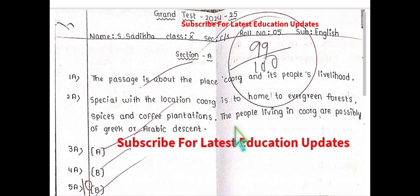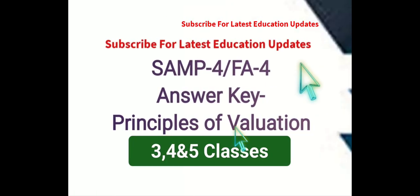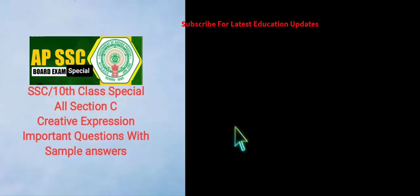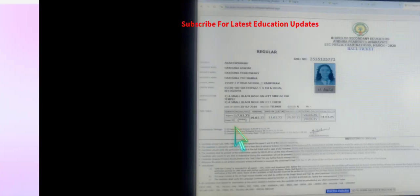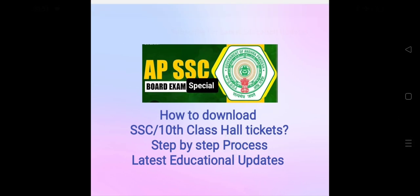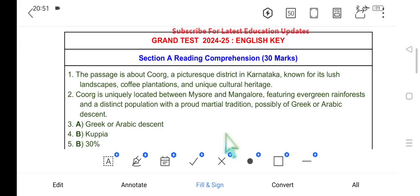We also uploaded the sample answer script of a student from Sri Sattasai's district, and there were a few technical errors — answers were marked and I have added my voice wherever there was a need to explain. Please watch that video too. For primary classes we uploaded the answer keys, all Section C important creative expressions, and tenses. How to download Class 10 and all these updates are available in our exclusive English and Education Updates. Please stay tuned and stay subscribed for more enriching updates.